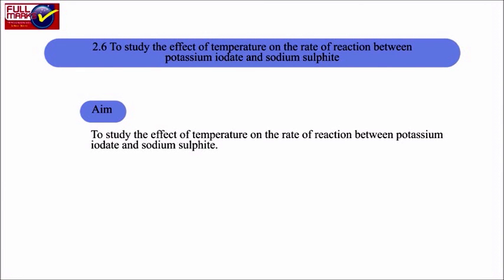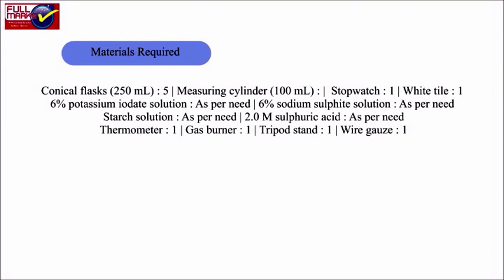Experiment 2.6: To study the effect of temperature on the rate of reaction between potassium iodate and sodium sulphite. Aim: To study the effect of temperature on the rate of reaction between potassium iodate and sodium sulphite. Materials required: 5 conical flasks of 250 ml each, measuring cylinder of 100 ml, a stopwatch, white tile, black tile.